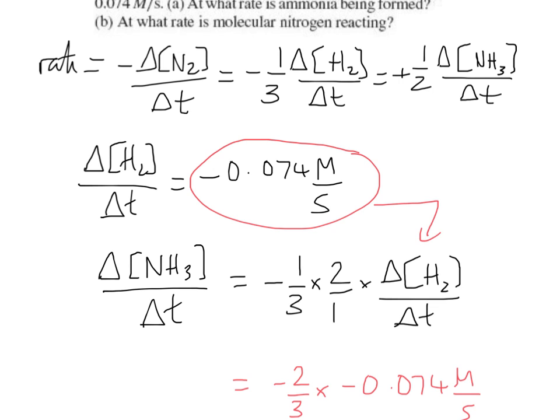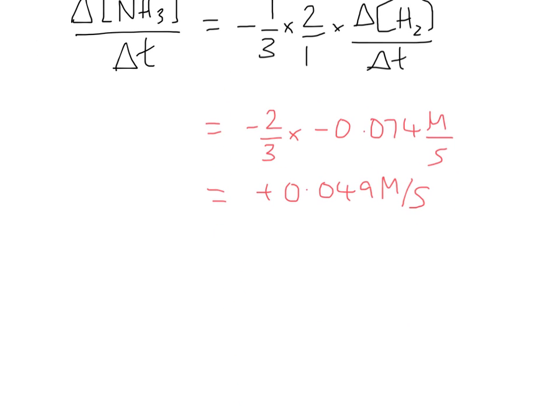We can see here that the rate is equal to minus the change in nitrogen with time, and that's equal to minus one-third the hydrogen. So we can go ahead and cross multiply both sides by 3 and equalize those two terms.